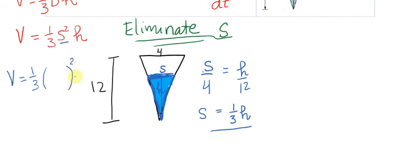s squared times h, but s we know is 1/3 h. So working all that out, we have that the volume is equal to 1/3 times a third squared is 1/9, so 1/3 times 1/9 is 1/27.